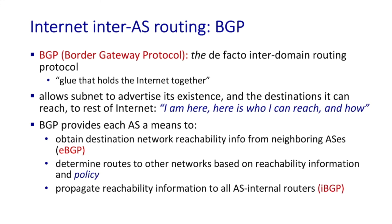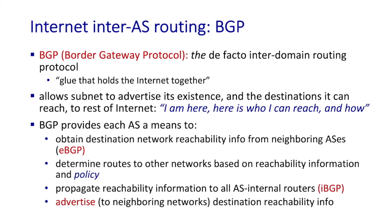BGP also provides each autonomous system with the means to propagate reachability information to routers within its own network. This communication with routers inside of an autonomous system is done through the IBGP protocol. And finally, there's a very subtle but also very powerful policy issue of what destination reachability information an autonomous system wants to pass on to its neighbors. If I'm an autonomous system and I know I can reach destination X, do I really want to tell my neighboring networks that? They might try to route packets through me to get to X, and maybe I don't want that to happen.